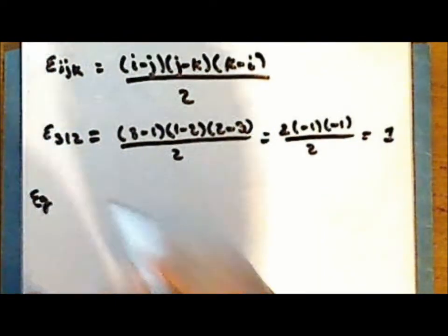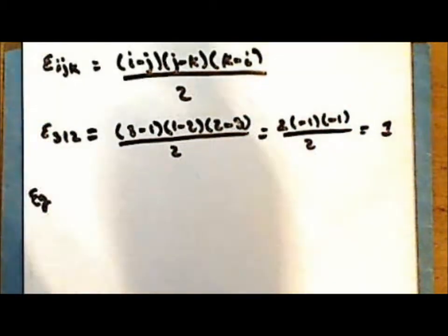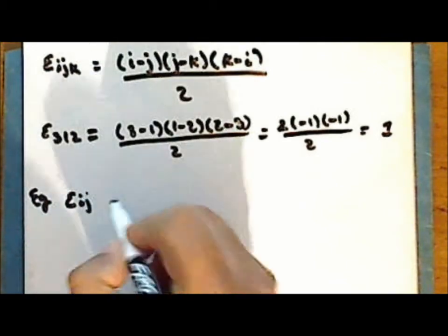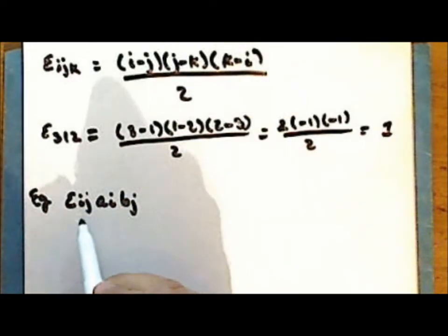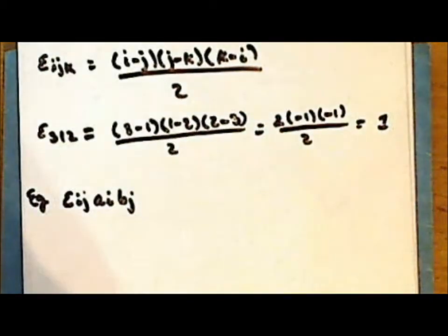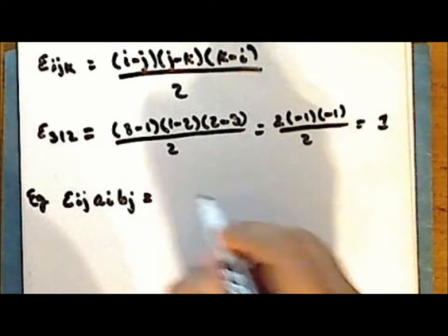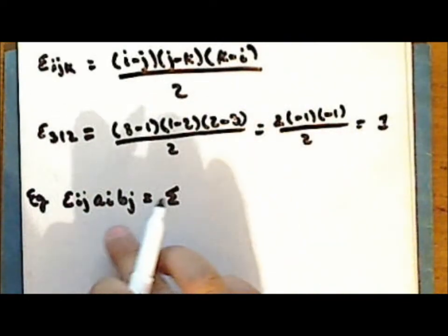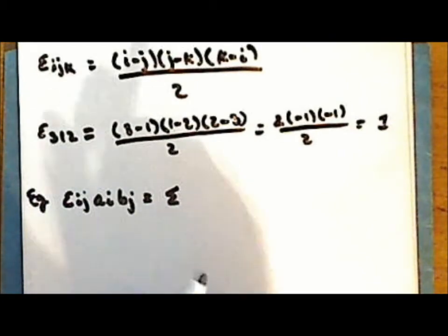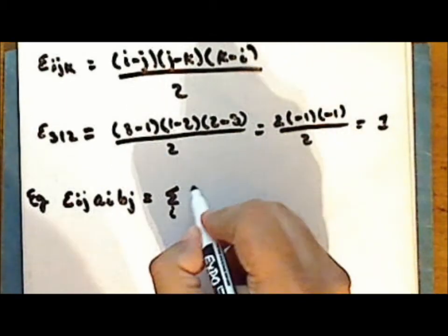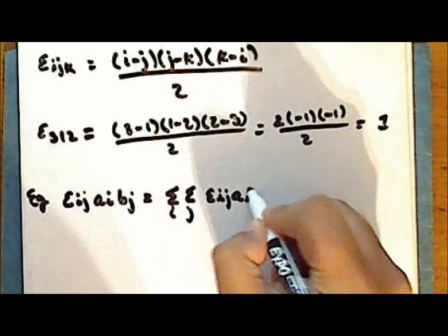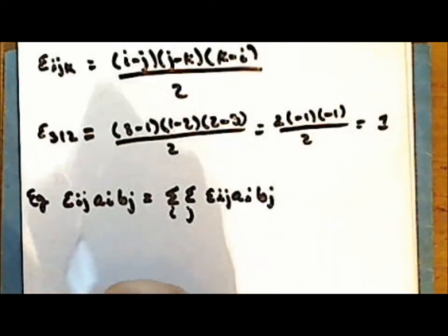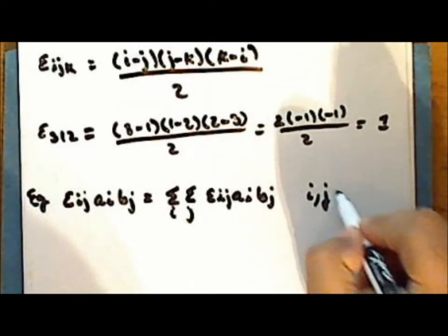Let's look at an example that uses the permutation symbol in a term. Consider epsilon sub IJ times A sub I and B sub J. Using Einstein's summation notation, there are two repeated indices, I and J, in this product, so we have a sum of a sum: the sum over index I times the sum over index J of epsilon sub IJ times A sub I times B sub J, where I and J range from 1 to 2.